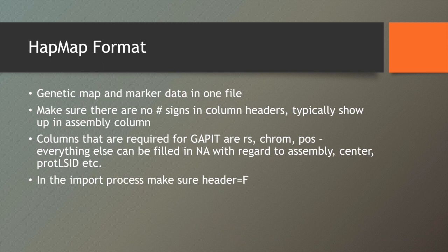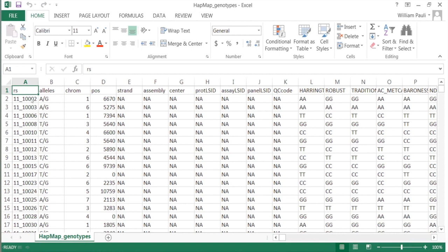For those not familiar with HapMap format, it's pretty much a genetic map and marker data put into one file. When you bring it into R, it's important to make sure there are no pound signs in the headers — they typically show up in the assembly number column. GAPIT doesn't actually use all the HapMap information; what it cares about is the name of the SNP, the chromosome, and the position. Everything else — assembly, center, and other info — can be filled in with NAs. When you do the actual import, set the header equals false command.